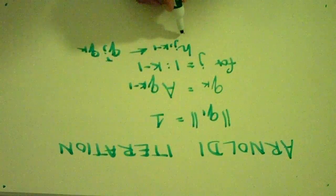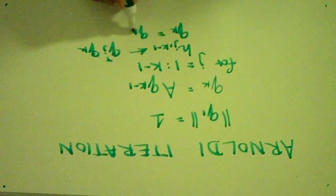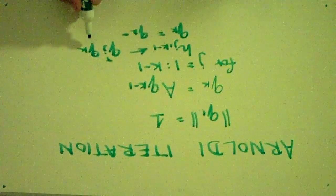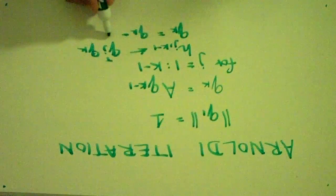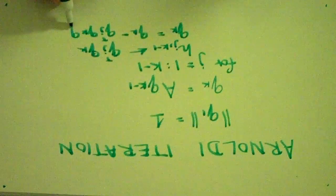And then, we would want to make QK equal to QK minus, we would want to subtract this length in the direction of J. So, we would have QJ transpose QK, QJ.